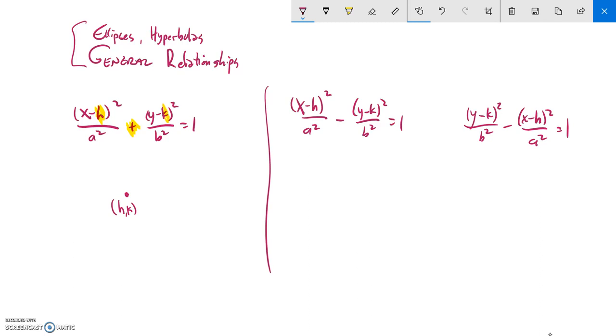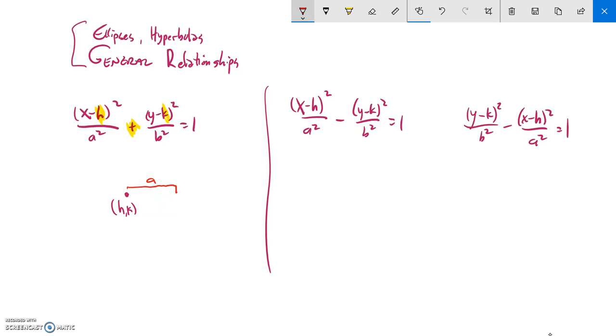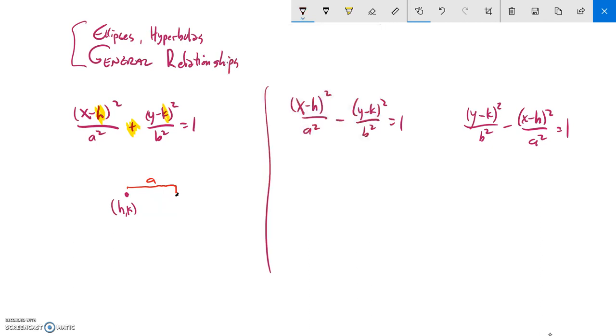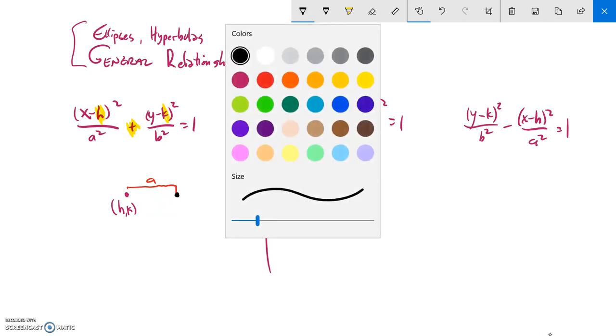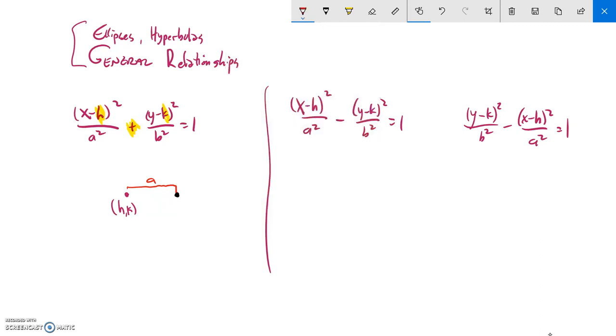Now the next thing I know is I have this number squared under the x minus h squared. So this is my offset in the x direction, and it's actually the square root of that. So this distance that's right here, whatever it is, is a. And that's going to be in both directions, so a in that direction and a in this direction as well.